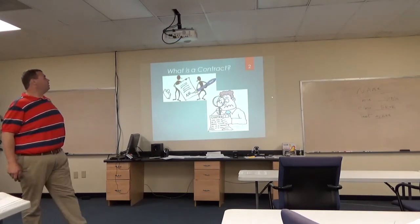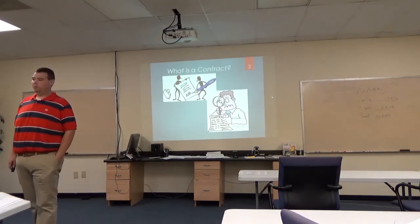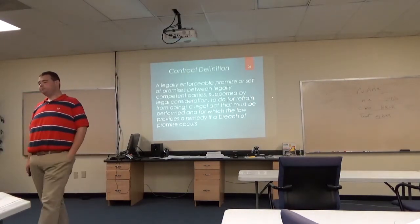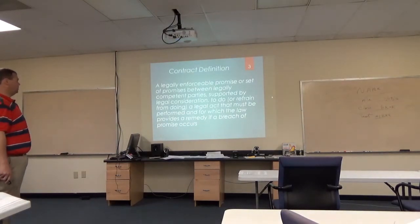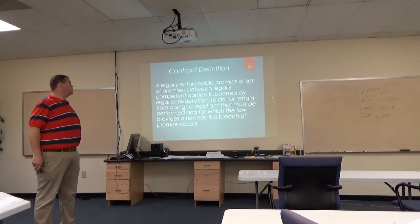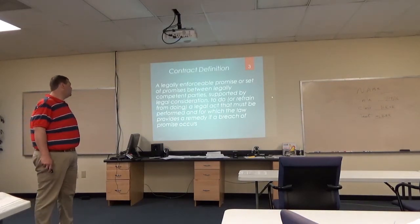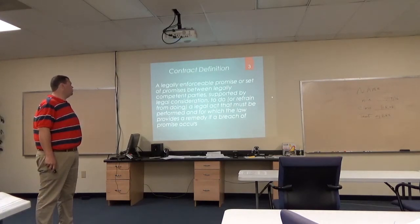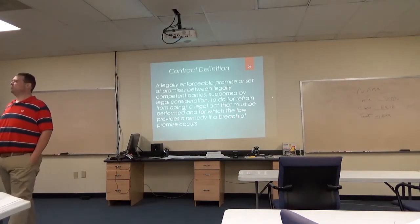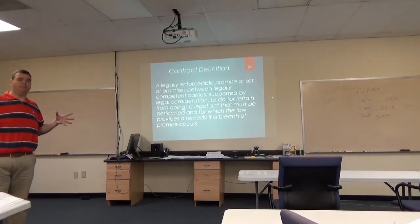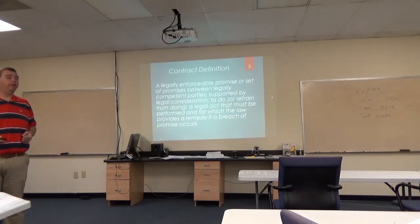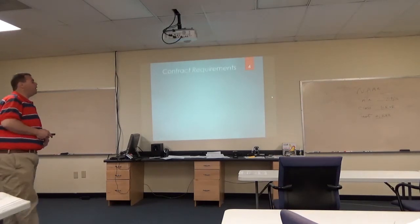Basic contract law. First of all, we need to talk about what is a contract. A contract is a legally enforceable promise or set of promises between legally competent parties supported by a legal consideration — to do or refrain from doing something for which the law provides a remedy if a breach of the promise occurs. It's basically an agreement that will be enforced in a court of law where two parties have agreed they're going to do something for one another, and if they don't, there's going to be some penalty. We'll talk about the requirements right now.